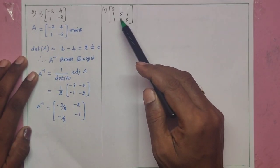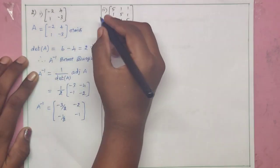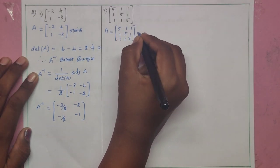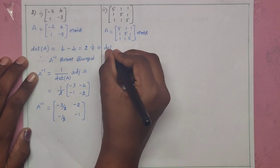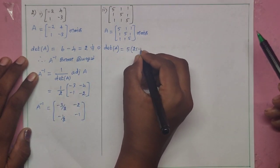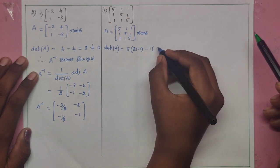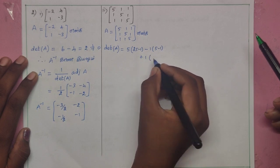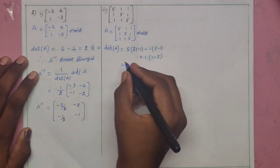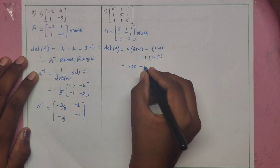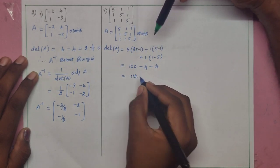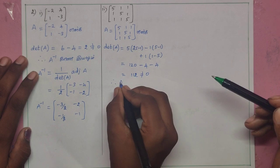Let's put A equal to the given matrix. The determinant of A: 5 is equal to 25 minus 1, minus 1 is equal to 5 minus 1, plus 1 is equal to 1 minus 5. So 5 minus 4, minus 4, minus 4 equals 24. Now we can find the inverse.